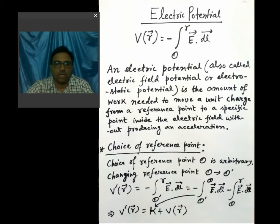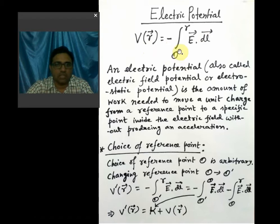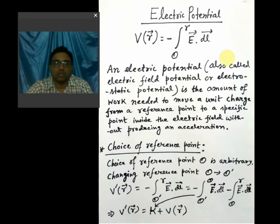Hello students, welcome to my class on electrostatics. In the last class I discussed the curl of electric field, and from there we define the electric potential. The potential at a point at distance r from the origin is defined as: V(r) = minus the integral from the reference point to r of E dot dl. It is the amount of work needed to move a unit charge from a reference point to a specific point inside the electric field without producing an acceleration.